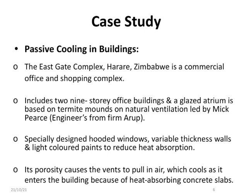The first case study is on passive cooling in buildings. The Eastgate Complex in Harare, Zimbabwe is a commercial office and shopping complex of two nine-storey buildings. It is modeled on the conception of termite mounds and how it works. Led by Mike Pearce, an engineer from firm Arup. Here, spatially designed hooded windows, variable thickness walls and light-colored paints are used to reduce heat absorption.